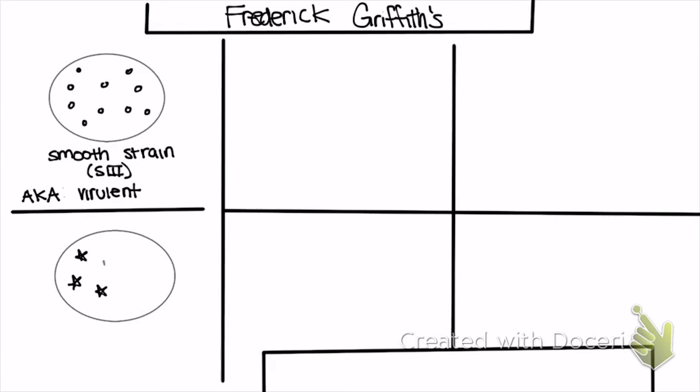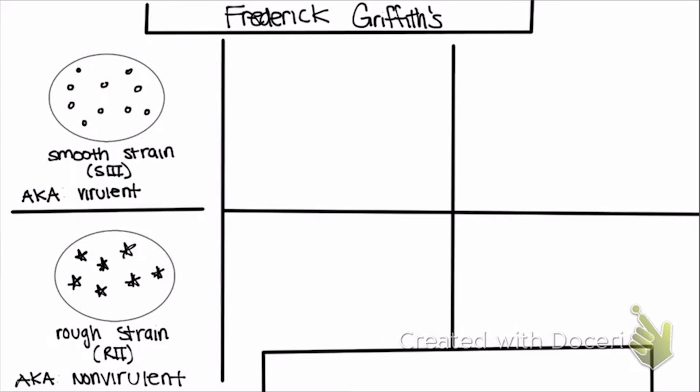In comparison to that, we have a rough strain. If you look at the bottom here, I'm going to draw a rough strain where I just draw it as stars. The rough strain is also called R2, and it's also a non-virulent strain. Any of these three terms are okay to be used when talking about it. This strain differs in the sense that it does not have the coat, which means the mouse antibodies can attack it and it would not cause death or pneumonia.